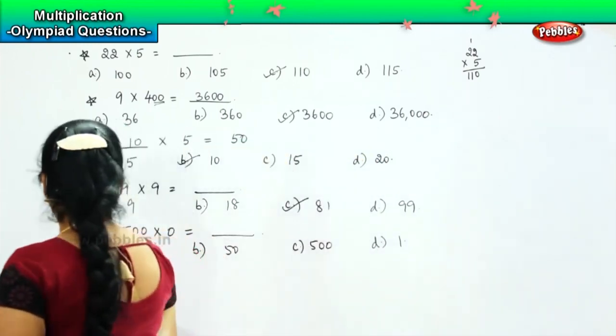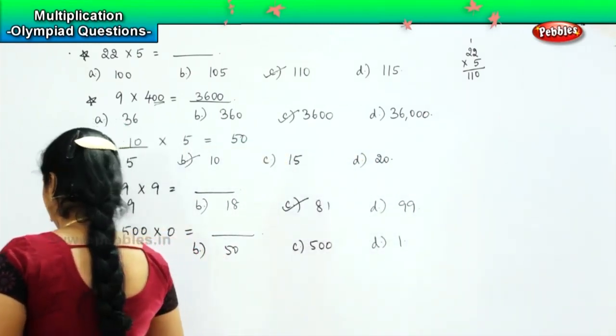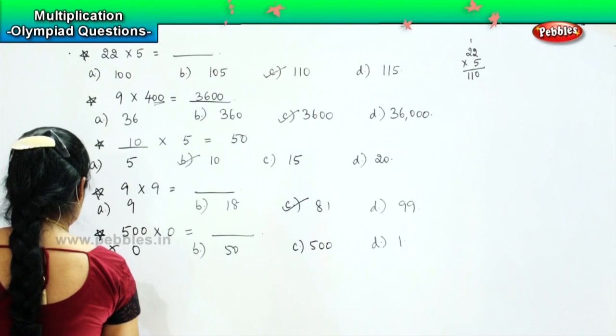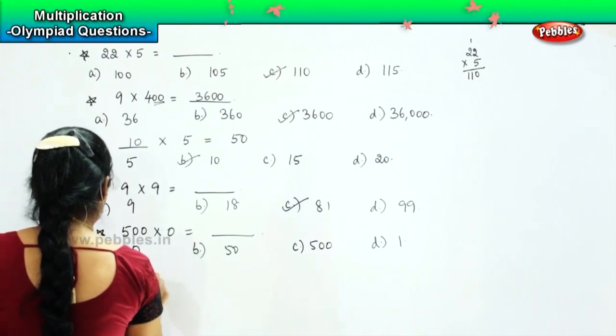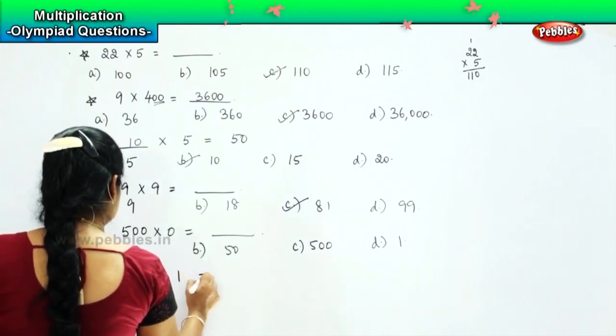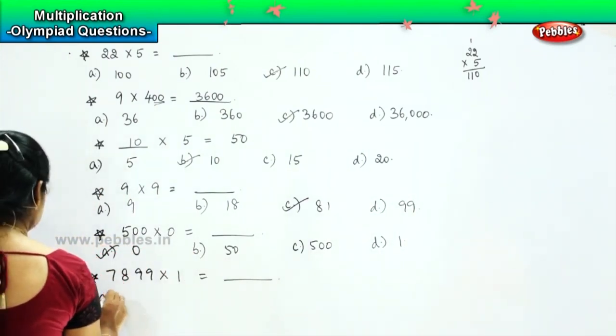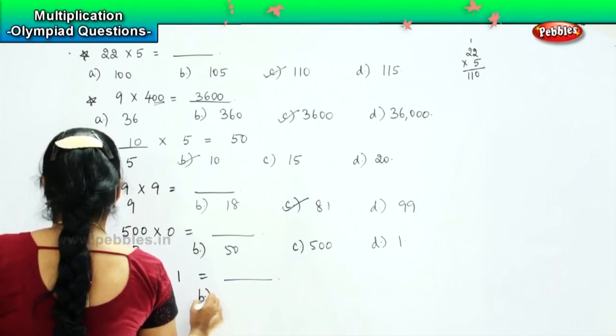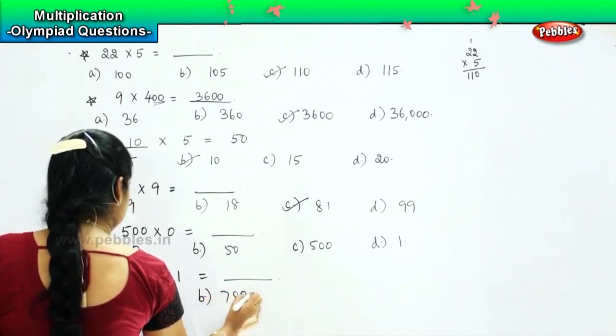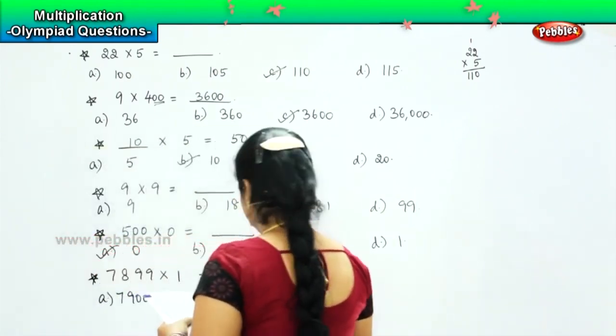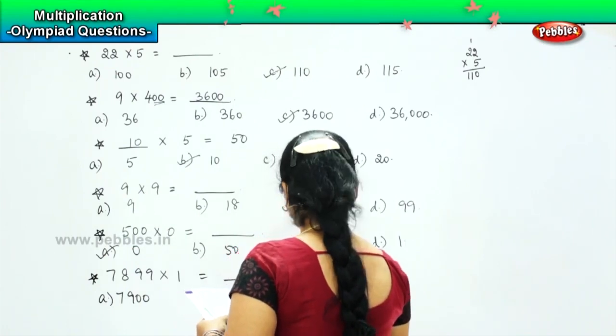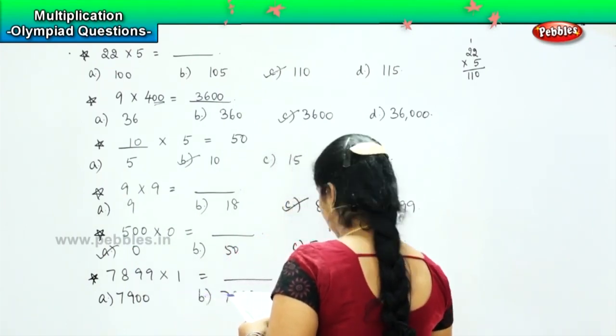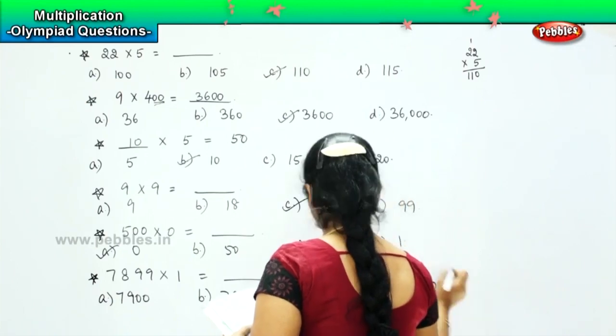So here is your next question, 7899 into 1 is equal to dash. Your options are 7900, option B 7899, option C 7898 and option D 7890.